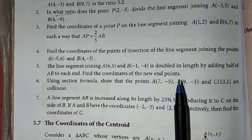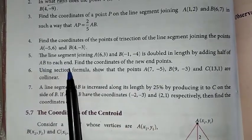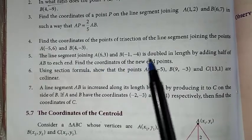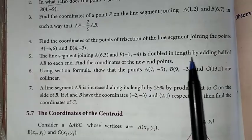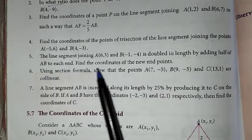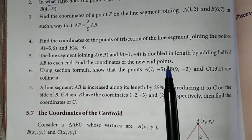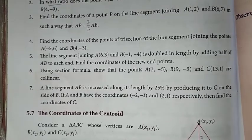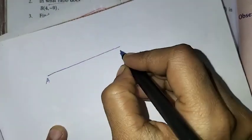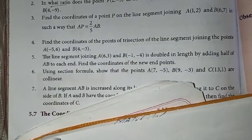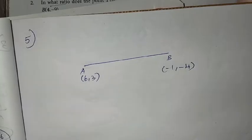5th sum. In the problem, the line segment joining A(6,3) and B(-1,-4) is doubled in length by adding half of AB to each end. Find the coordinates of the new end points. So the question gives us one line segment AB, where A is (6,3) and B is (-1,-4).